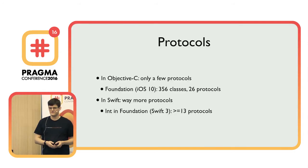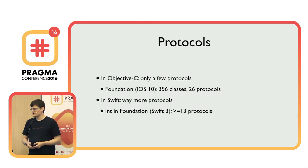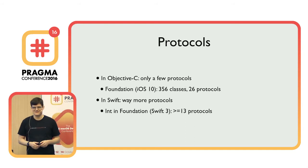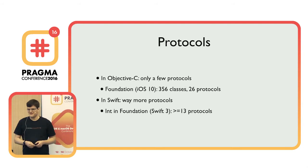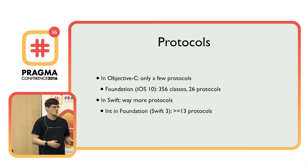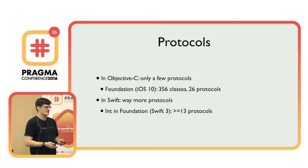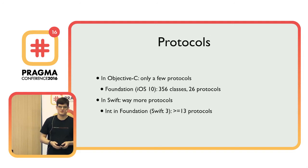I looked at the Foundation framework and counted: we have 356 classes and only 26 protocols. I didn't count by hand — I used some grep and stuff because I'm lazy. Then I looked at Swift, and in Swift we are using way more protocols. For instance, the Int type alone has more than 13 protocols.